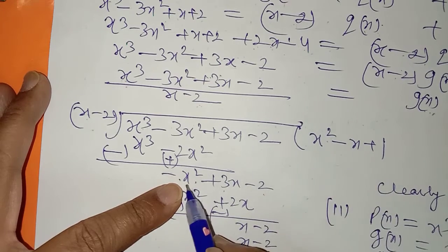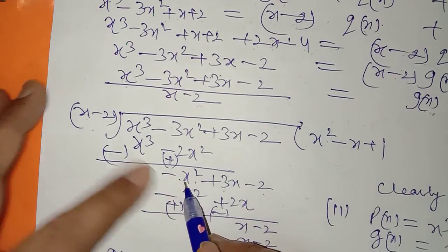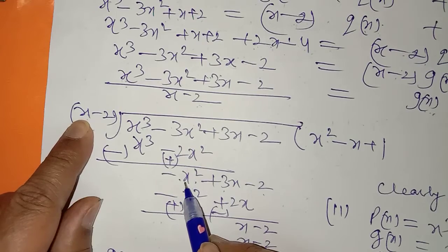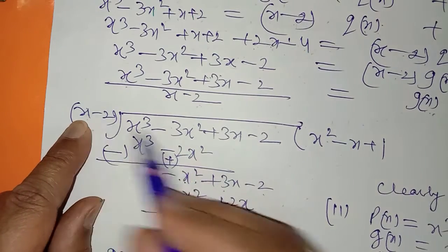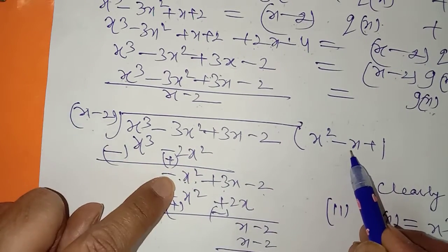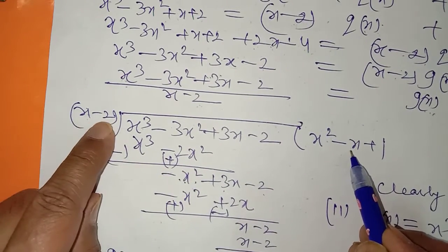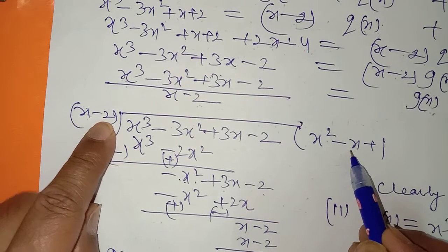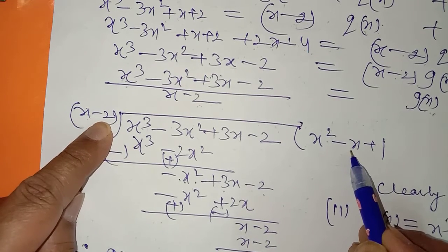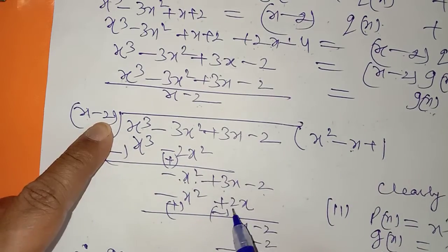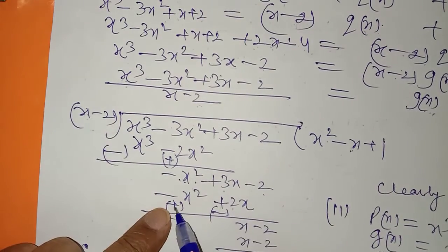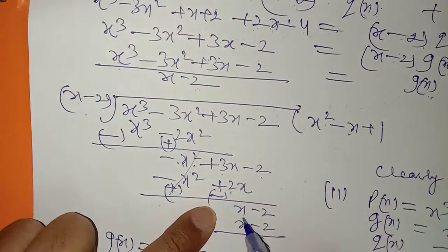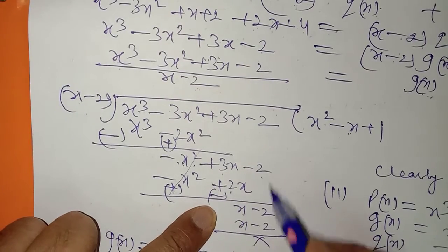ٹھیک ہے — اب یہاں پر minus x square ہے، یہاں پر x ہے، تو minus x سے multiply کرنا پڑے گا۔ minus x سے کرنا: minus x square آیا، اس کو minus x سے کرنا — minus کا plus کا — 2x آیا، plus کا ہو گیا، یہ cancel ہونا ہی ہونا ہے۔ plus کا 3x minus 2 بچا — تو plus کا x minus 2 آ گیا۔